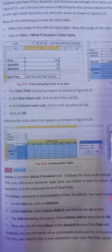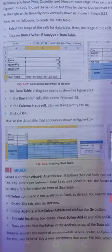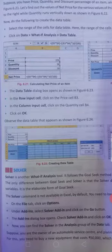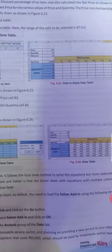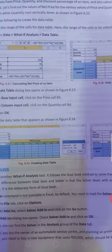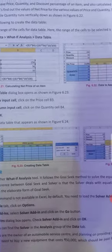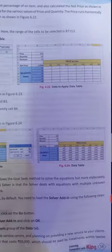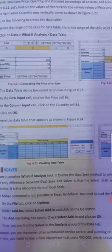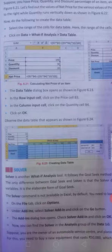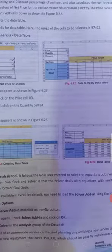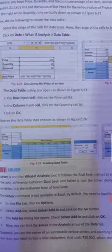Now last but not least, solver. Solver is another what-if analysis tool. It follows the goal seek method to solve the equation but more elaborately. Difference between the only difference between goal seek and solver is that the solver deals with the equation with multiple unknown variables. It is the elaborate form of goal seek. The solver command is not available in Excel by default. We need to load the solver using the following steps.